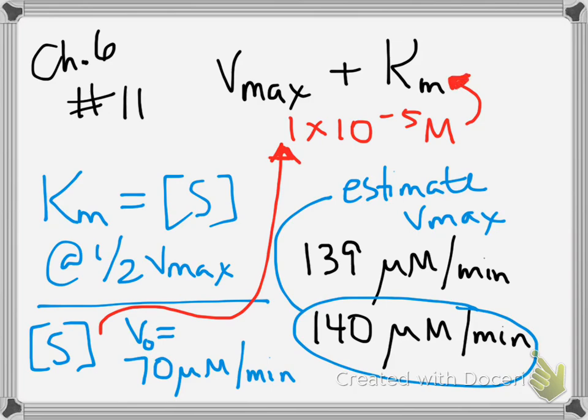But because you see the velocity begin to plateau out toward the end of your data set, given the fact that you're providing a lot more substrate but you don't get that much more velocity, that really indicates that you're achieving the plateau of Vmax.